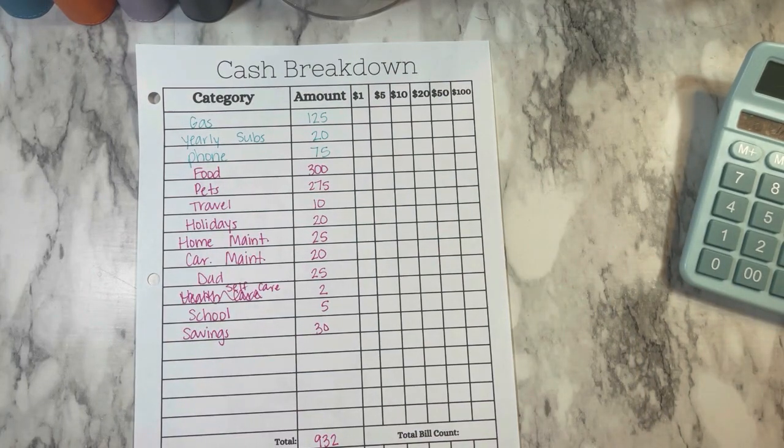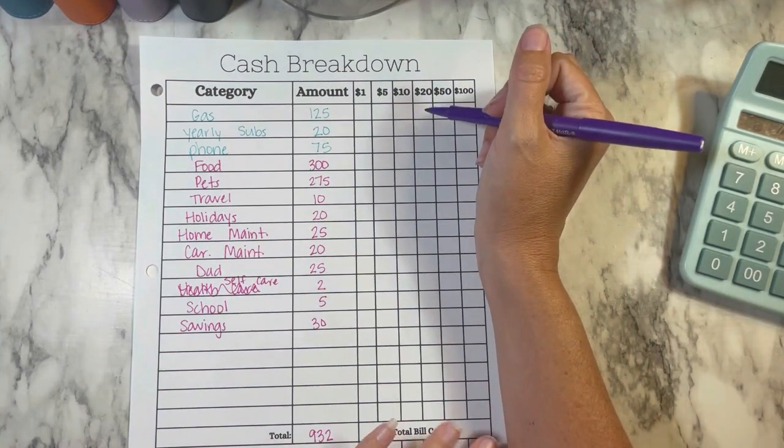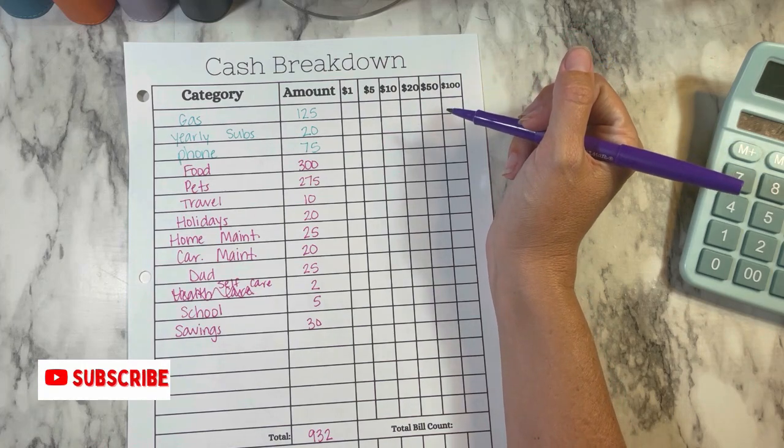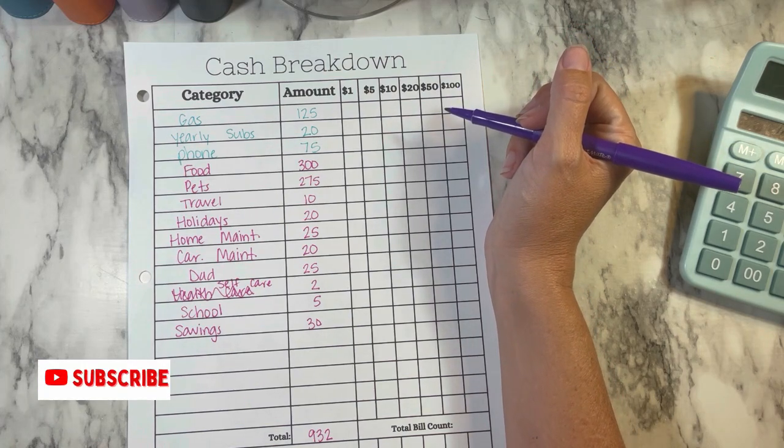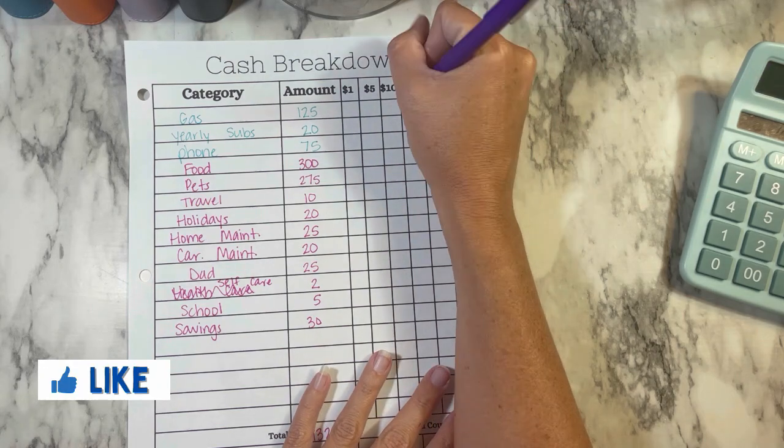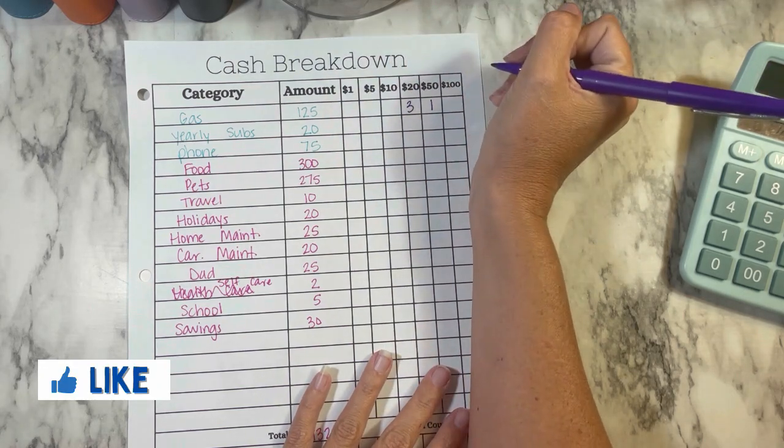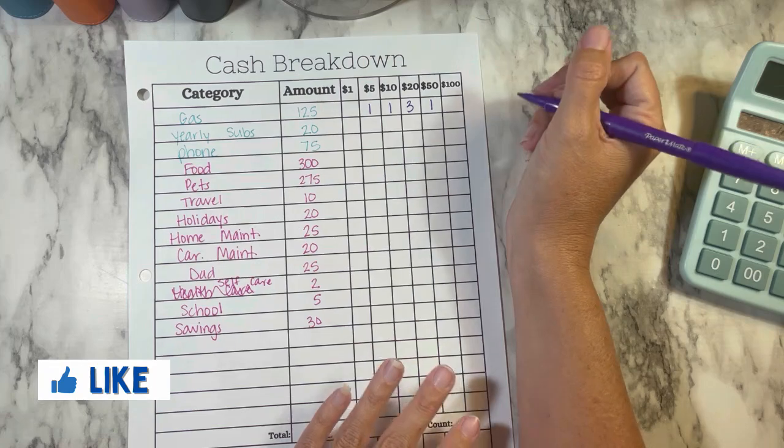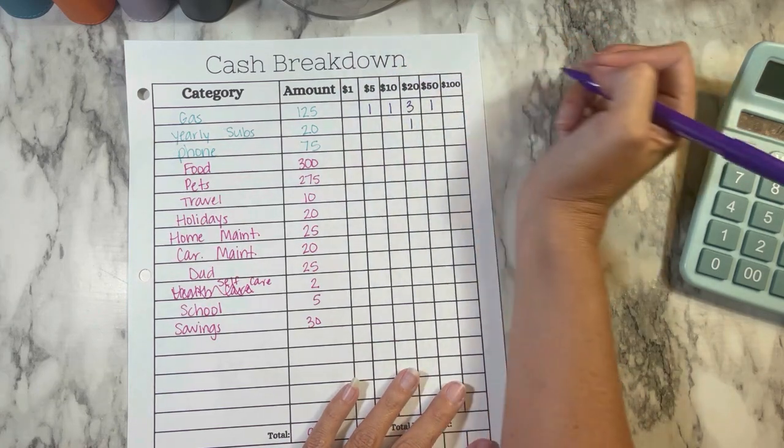For gas, I was getting out $125. I just got gas, so I should be good there. That's why we're going to pull all of it out in cash. So we're going to do one $50, three $20s, one $10, and one $5. Yearly subs is going to get a $20.